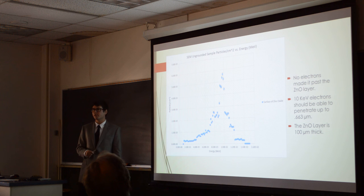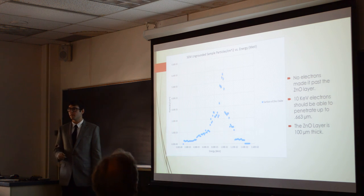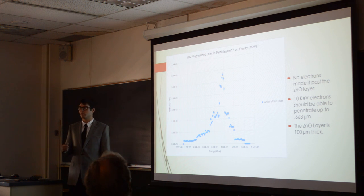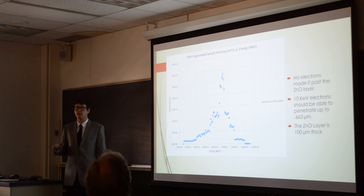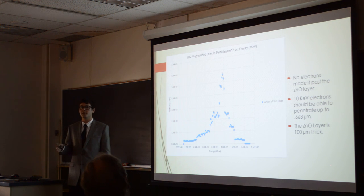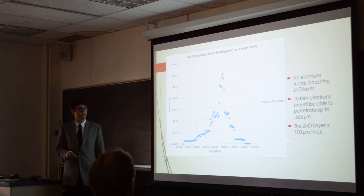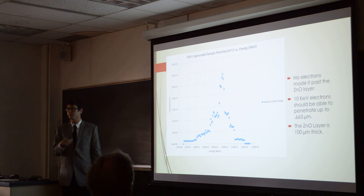For the scanning electron microscope sample, no particles made it past the zinc oxide layer. To verify this, I looked up a table of stopping powers for zinc oxide and electrons at 10 kilo-electron volts, and found that electrons would travel about 0.663 micrometers in zinc oxide at 10 keV. My zinc oxide layer was 100 micrometers thick, so these results are pretty accurate — the particles shouldn't be getting all the way through.